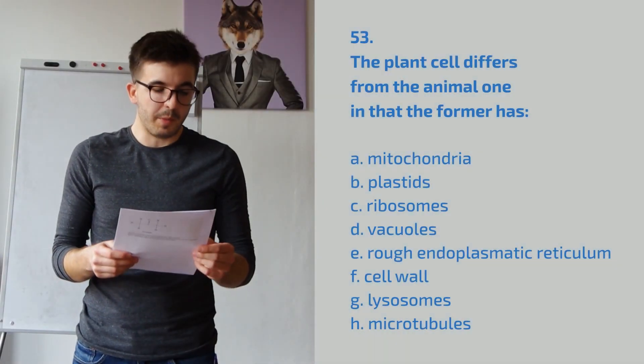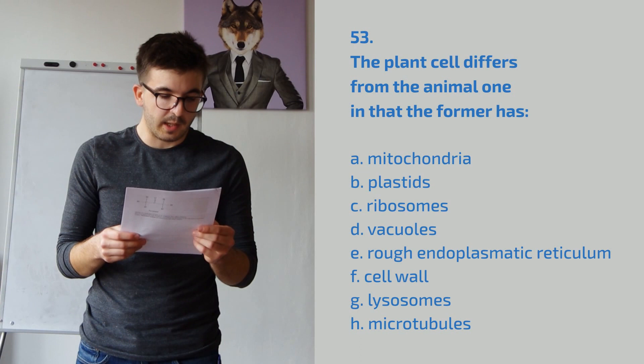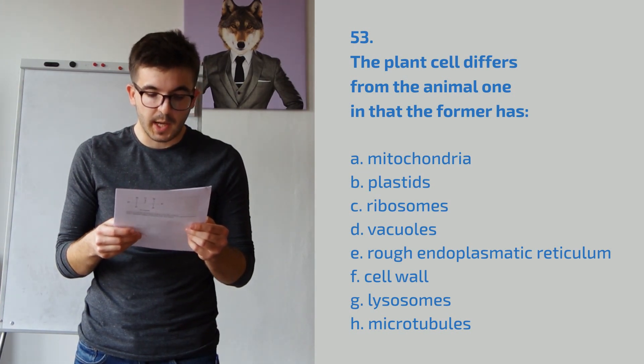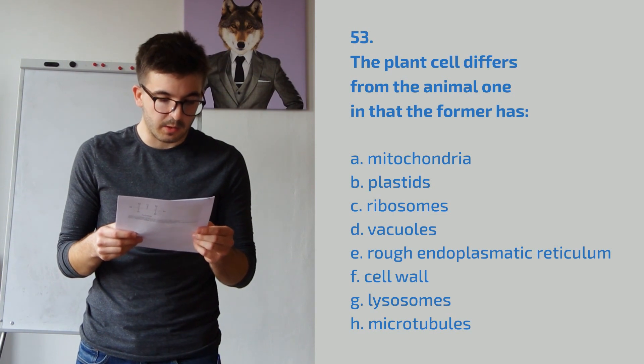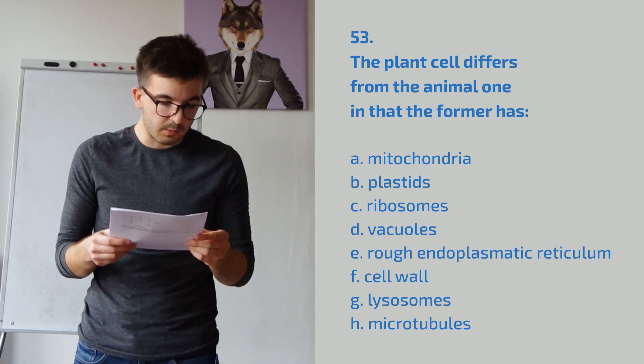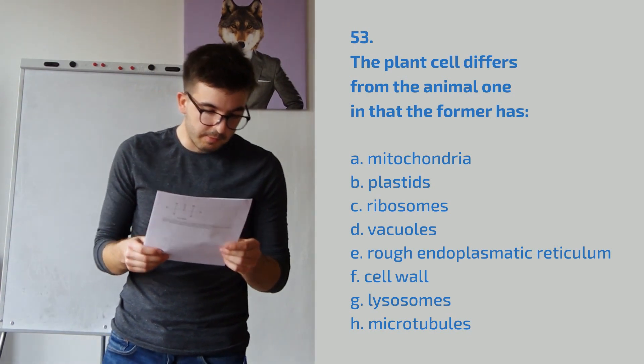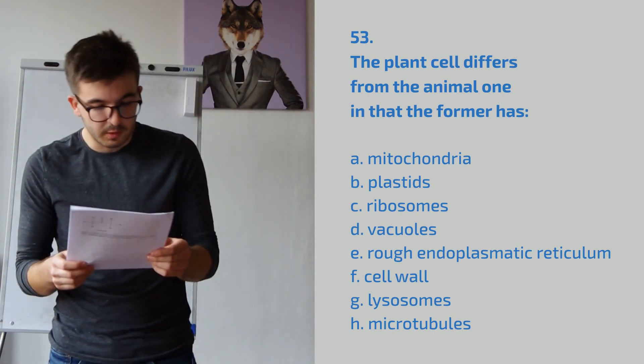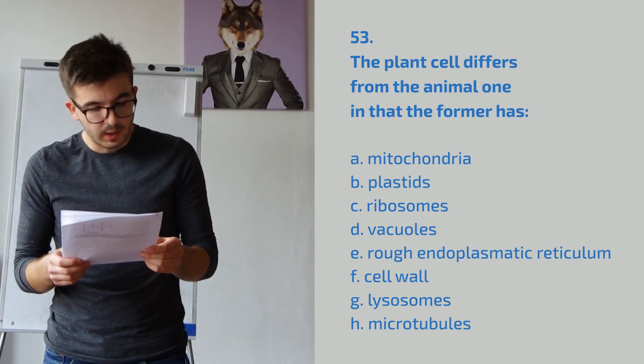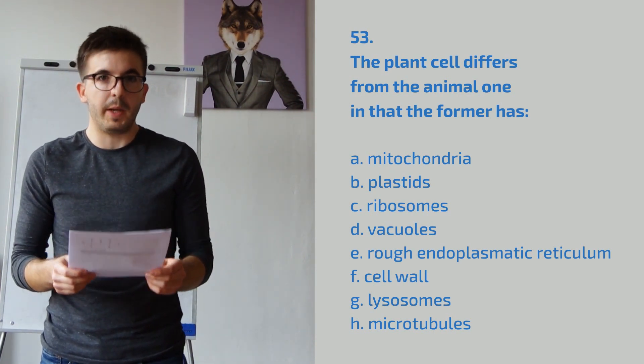Question 53 from biology. The plant cell differs from the animal one in that the former has: A. Mitochondria, B. Plastids, C. Ribosomes, D. Vacuoles, E. Rough endoplasmic reticulum, F. Cell wall, G. Lysosomes, and H. Microtubules.